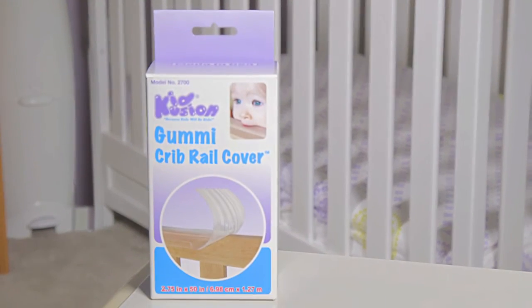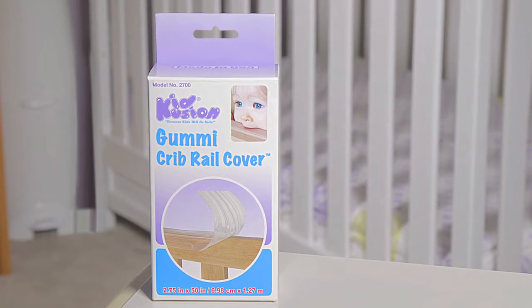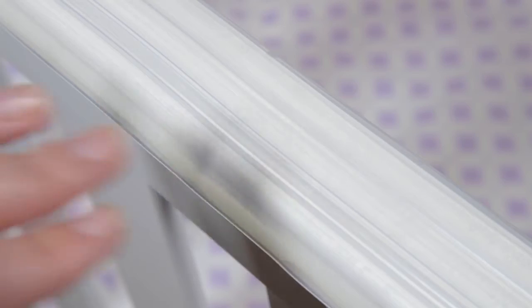Protect your teething baby with the Gummy Crib Rail Cover. This non-toxic rubber-like rail is BPA-free, latex-free, splinter-free, and it's made in the USA.